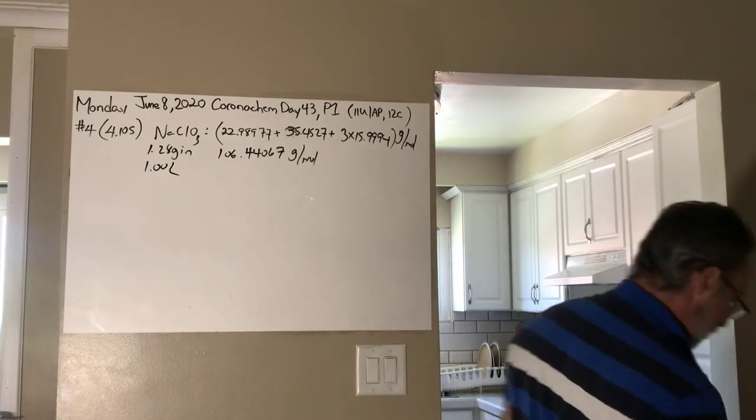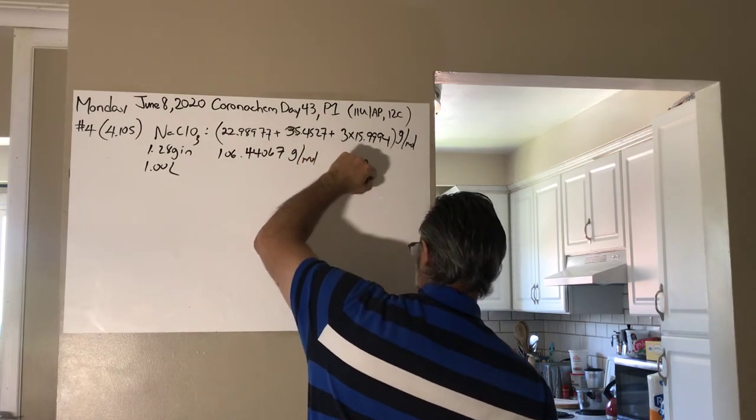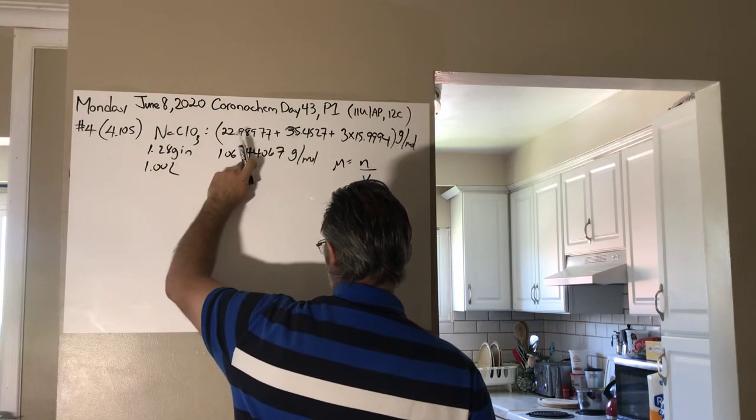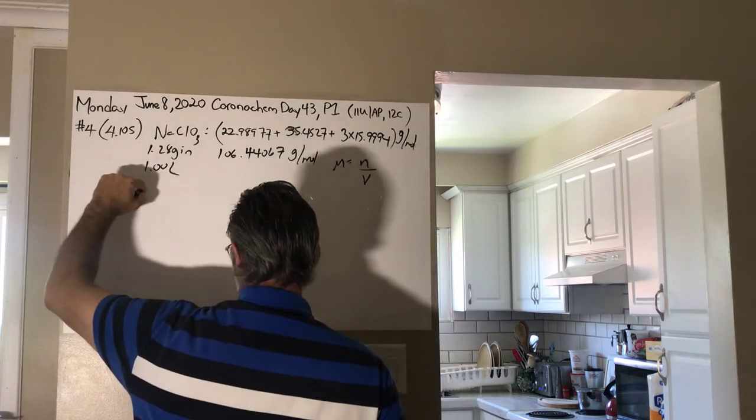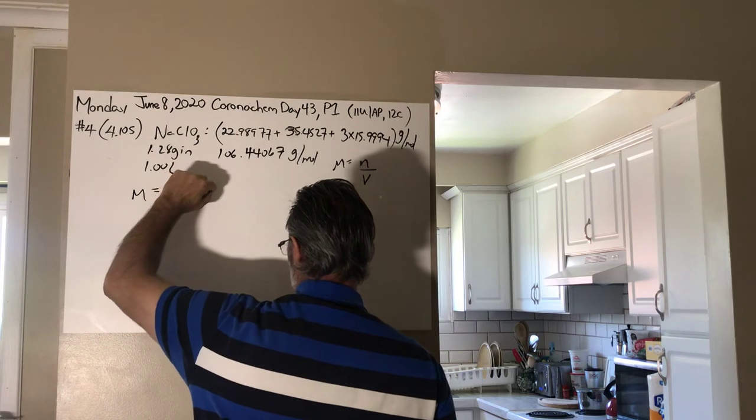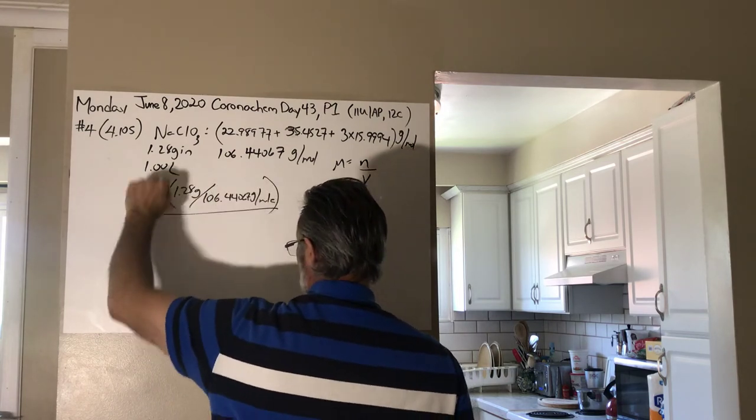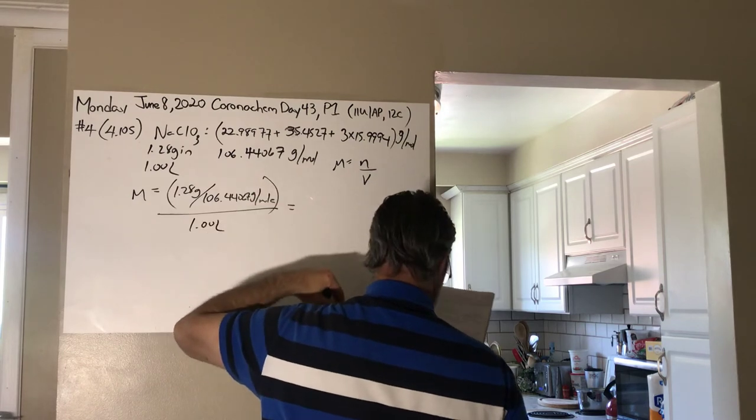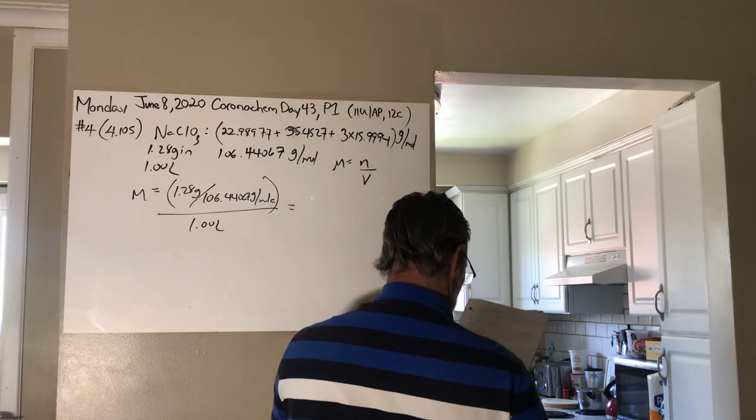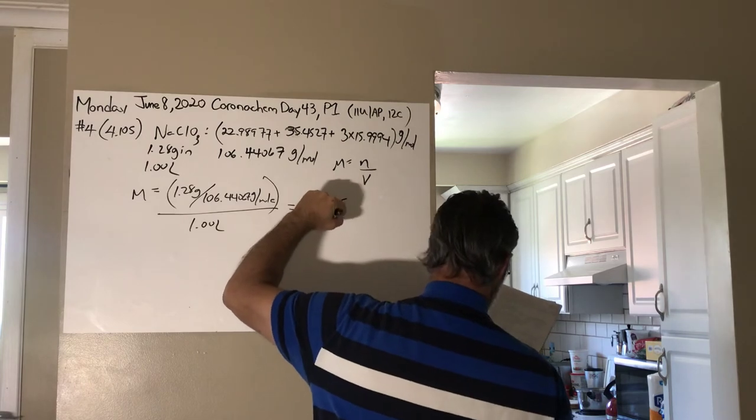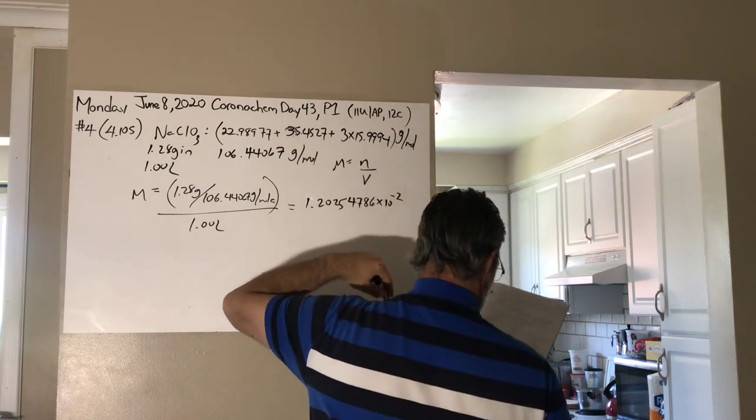And you are told you have 1.28 grams in a 1.0 liter solution. So since the molarity is equal to the number of moles over the volume, we have 1.28 grams at 106 grams per mole, and then the volume is one liter. So molarity equals 1.28 grams divided by the molar mass, 106.44067 grams per mole. That's going to give you moles. And then there's one liter of solution. So the molarity of the solution comes out to 1.20254786 times 10 to the minus 2 molar.